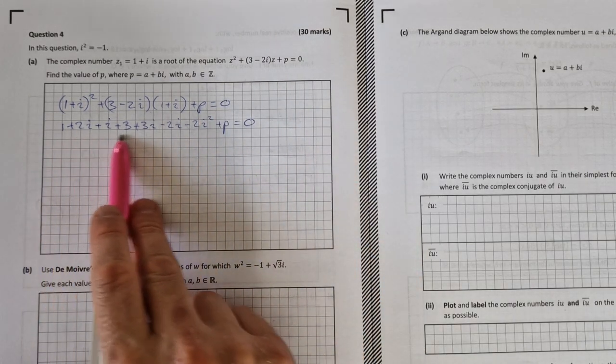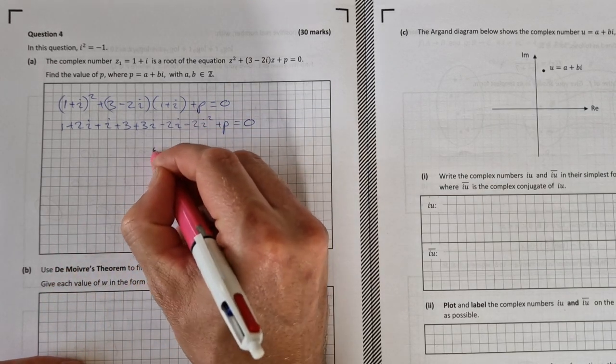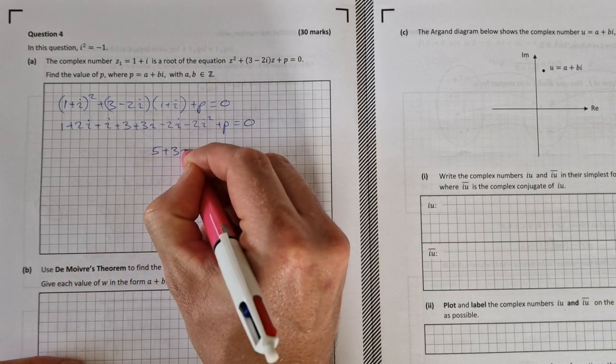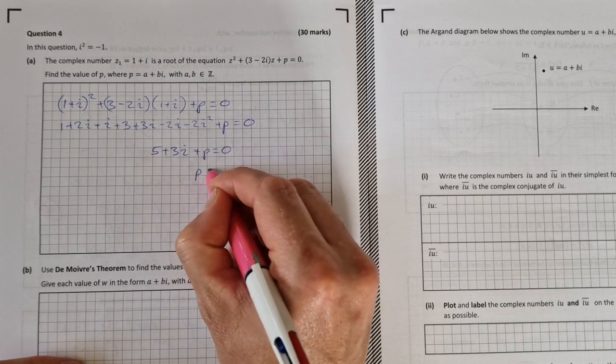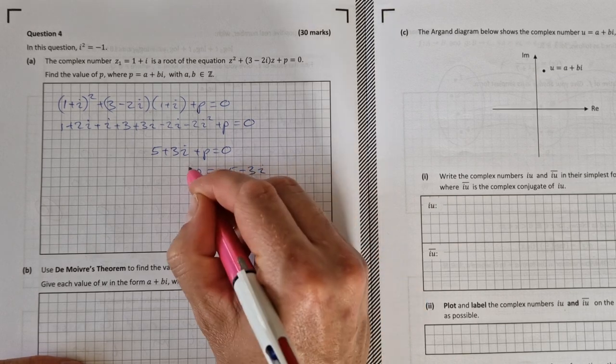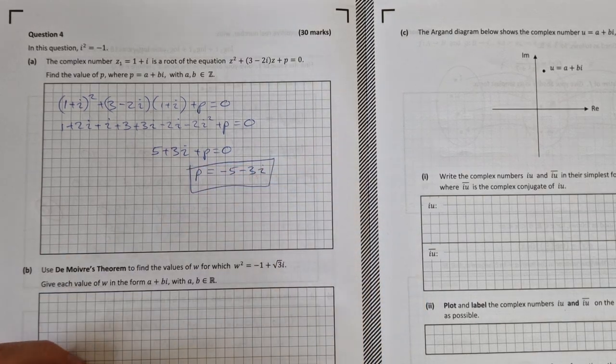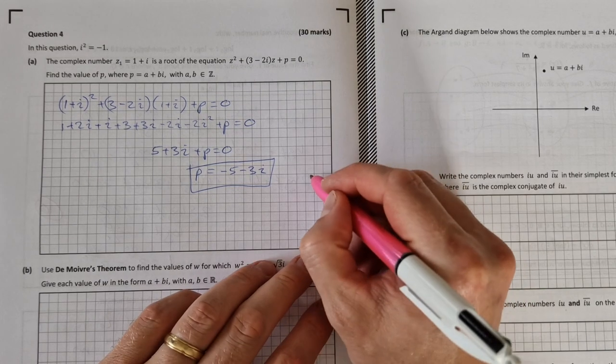Tidying it all up then, putting the i's together and the numbers together, you'll end up with 5 plus 3i plus p equals 0. And we want p on its own, so p equals minus 5 minus 3i. So this part a question, out of 30 marks, was worth 5 marks.